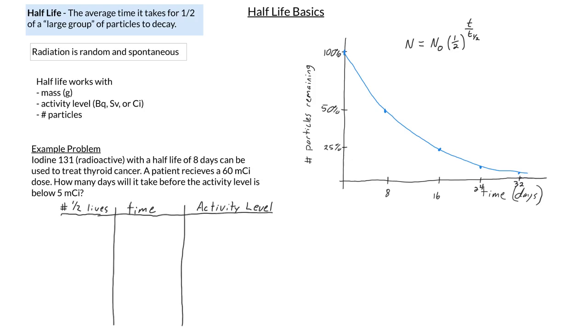Make your first entry in your table to be your initial conditions. At zero half-lives, no time has passed, my activity level is 60 millicurie. Then after one half-life has passed, that's going to be eight days. So then I'm going to cut my activity in half.